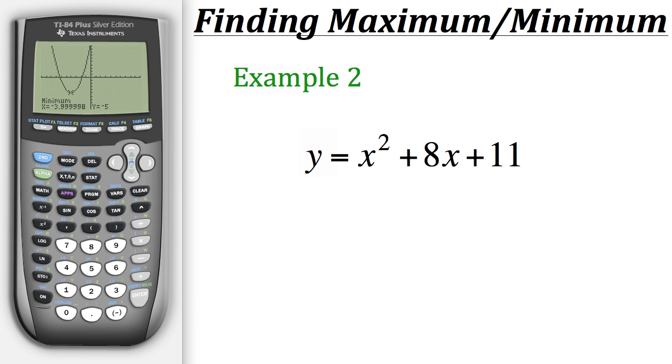Now as we could see from here our minimum is going to occur when x is about negative 4 and y is negative 5.